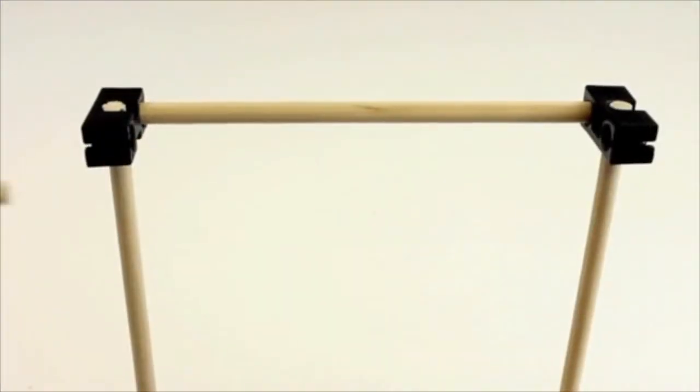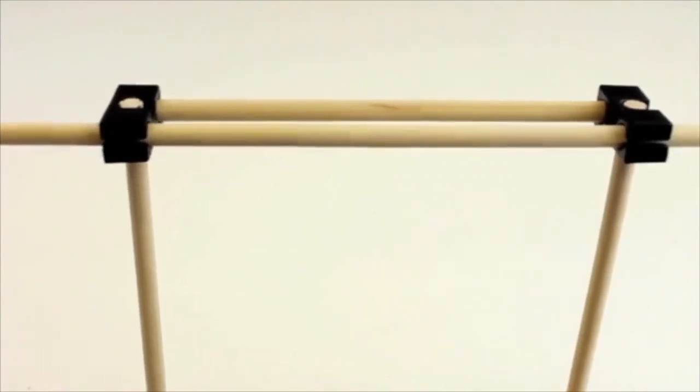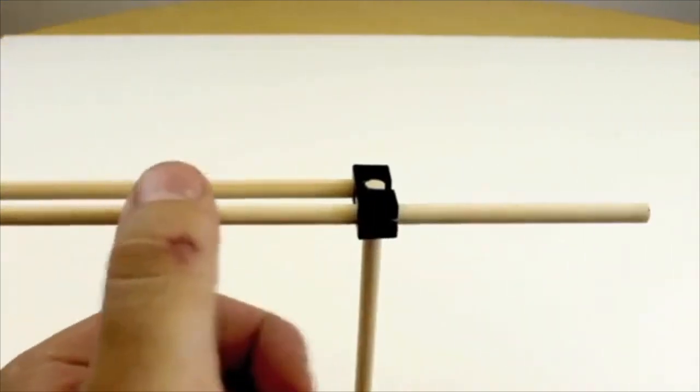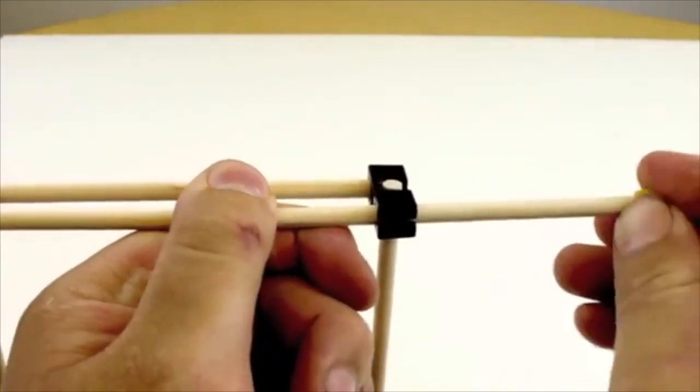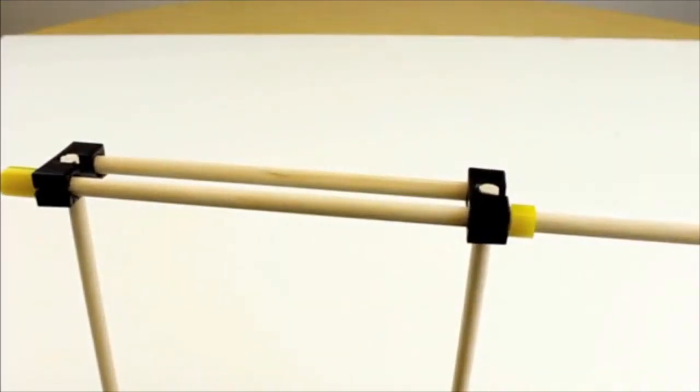Take the dowel with the hub on it and place it into the holes that you previously reamed out. Cut another small piece of slide stop and place it onto the other end of the dowel. Then slide it down so it almost touches the perpendicular block.